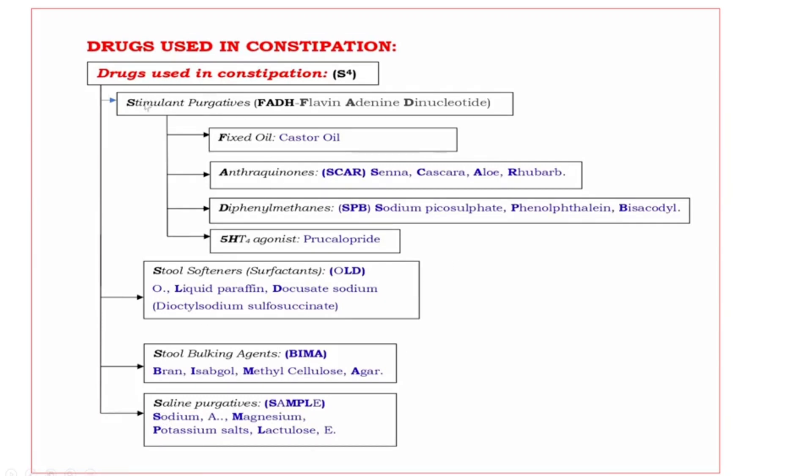One by one we are going to discuss. First one, stimulant purgatives. Stimulant purgatives further divided into four subgroups. What are those? FADH. Flavin adenine dinucleotide. F: Fixed oil. A: Anthraquinones. D: Diphenyl methanes. H: 5-HT4 agonist.